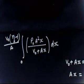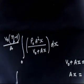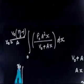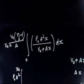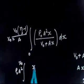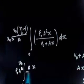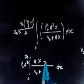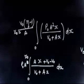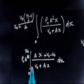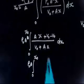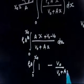Integrating from 0 to x0: the integral of P0·A²·x / (V0 + Ax) dx. Let me simplify — pull out P0·A as a constant. Inside we have Ax / (V0 + Ax). I add and subtract V0 in the numerator: Ax/(V0 + Ax) = 1 - V0/(V0 + Ax).